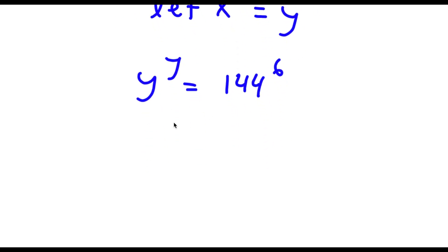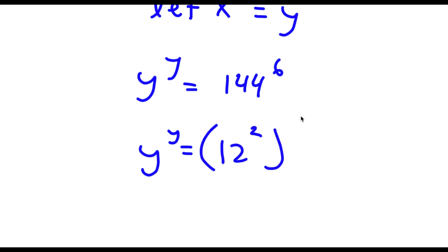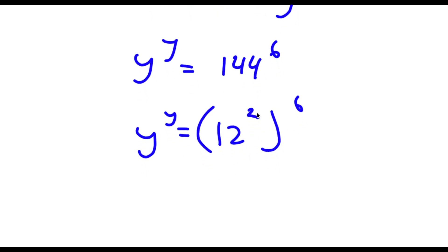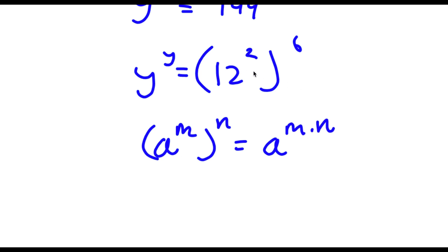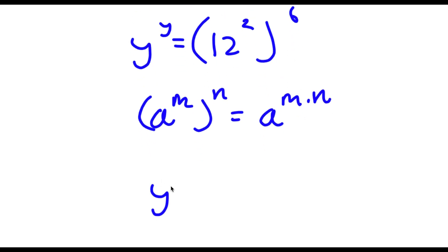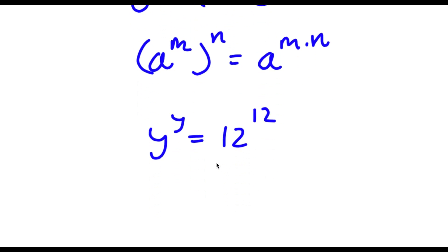Now 144 is the same thing as 12 to the power of 2. So now I have y to the power of y is equal to 12 to the power of 2 to the power of 6. Remember, a to the power of m to the power of n equals a to the power of m times n. So 12 to the power of 2 to the power of 6 equals 12 to the power of 12.